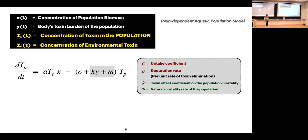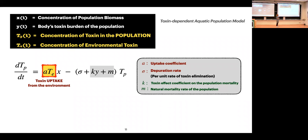We have a differential equation describing how toxin concentration in the population changes over time. The first term a·T_e represents toxin uptake from the environment, where a is the uptake coefficient. For rate out, we have the sum of per unit death rates plus sigma—the depuration rate, which is per unit rate of toxin elimination—all multiplied by toxin concentration in the population. Finally, body burden Y equals toxin concentration in the population divided by concentration of population biomass.